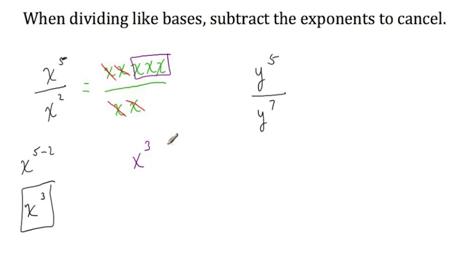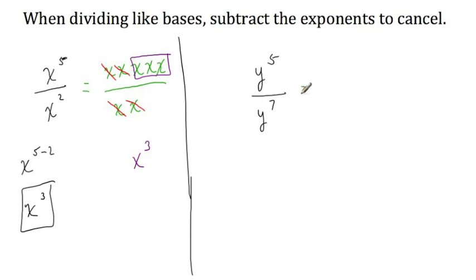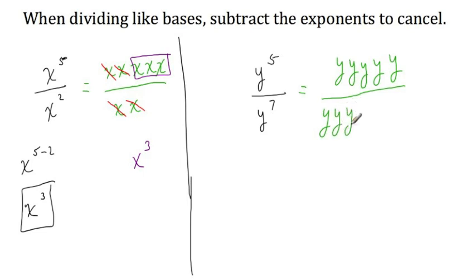Now let's consider the second example: y to the fifth over y to the seventh power. This example is slightly different because there are fewer factors of y in the numerator than there are in the denominator. If I were to write this out, I would have y to the fifth power as five factors of y in the numerator. In the denominator, I have y to the seventh power, so that means I have seven factors of y in the denominator. An important thing to notice is that there are actually more factors of y in the denominator than in the numerator, and that's very obvious once you've written out the factors using the definition of an exponent.